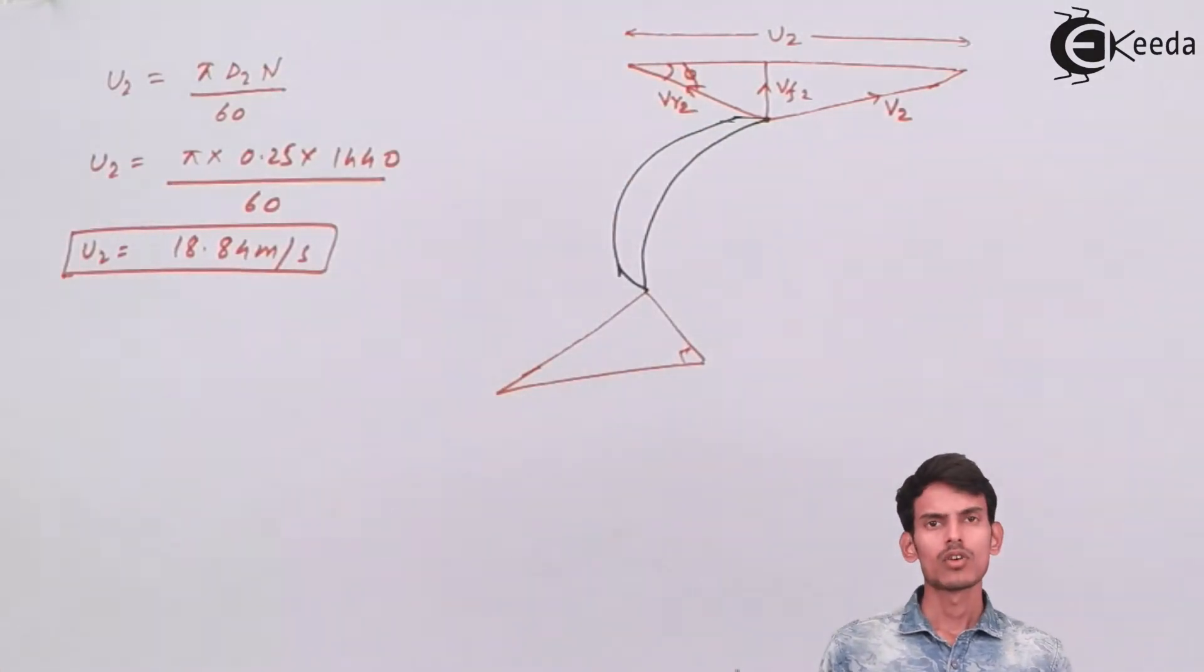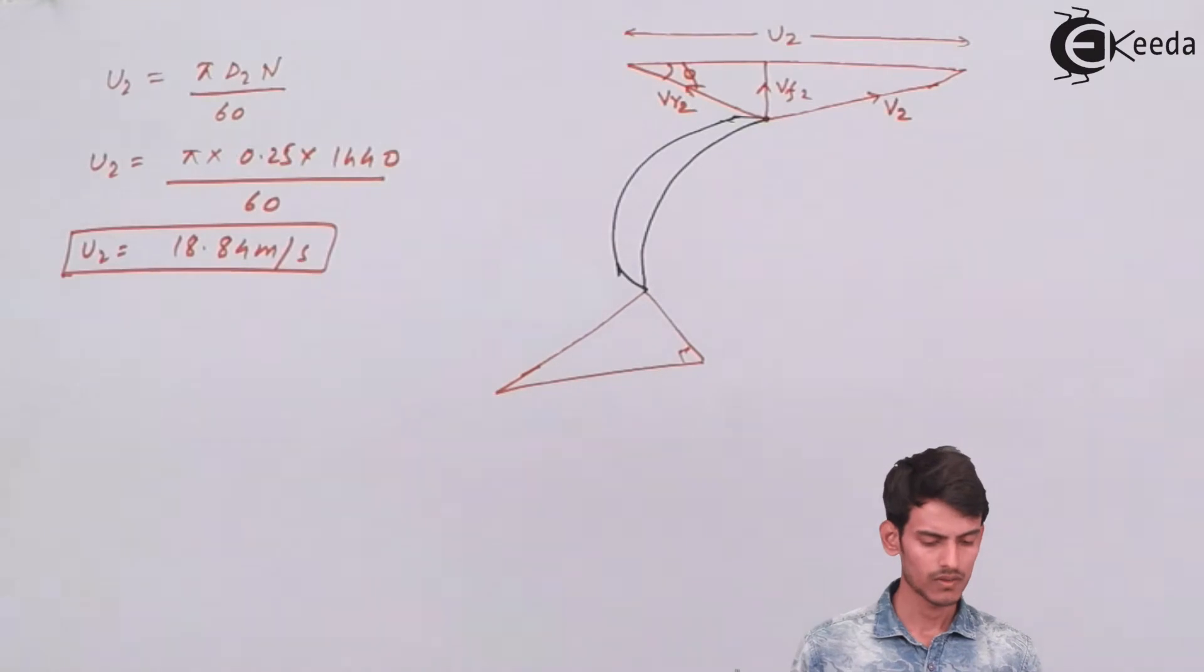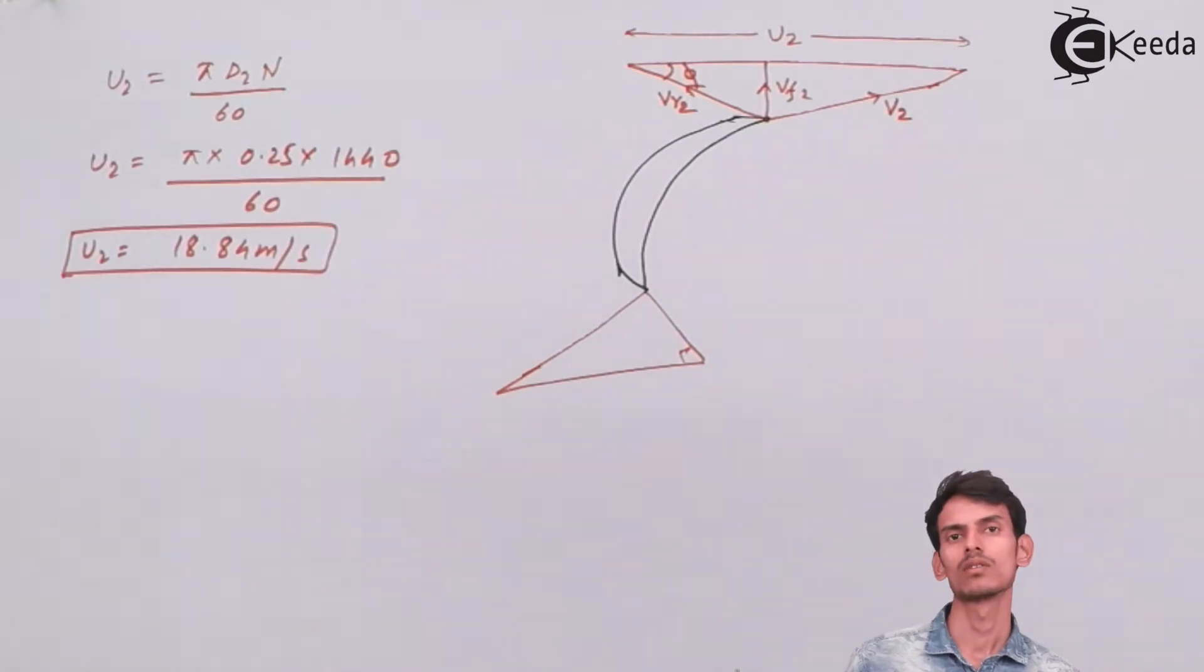As you can see, I've drawn the triangles. We are interested in the outlet triangle only; we are not bothered about what is at the inside. Now let's use the formula of manometric efficiency that is already given to us, and using that we can get the value of Vw2.